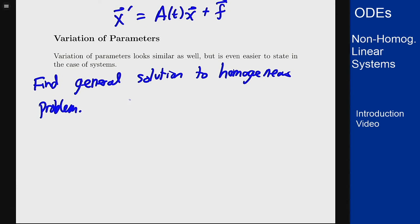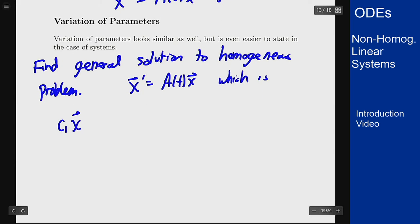So you find the general solution to the homogeneous problem which will just be x' = A(t) times x, which we'll say is c1 times solution x1 plus c2 solution x2 up to cn solution xn